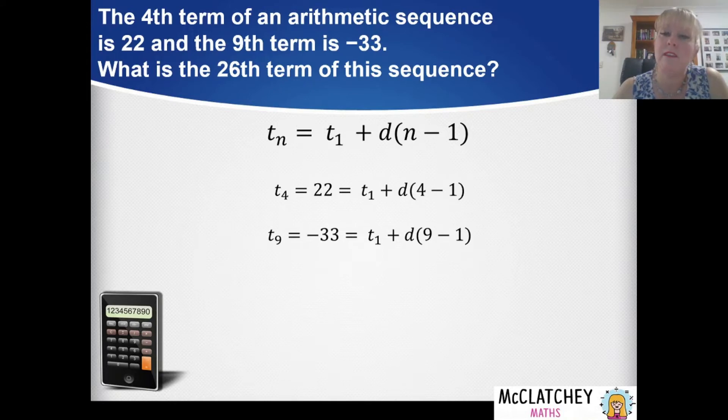And the second time we've got n is equal to 9. The ninth term is equal to negative 33 which is also equal to the first term plus the common difference multiplied by 9 take away 1. Now what I'm going to do here is get rid of the t4 and the t9 because that's making an equation that's a bit messy with two lots of equal signs.